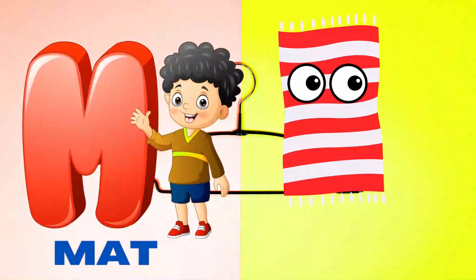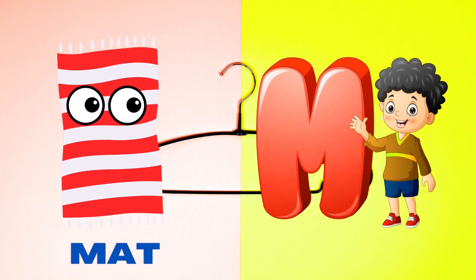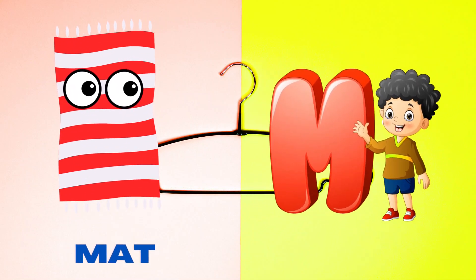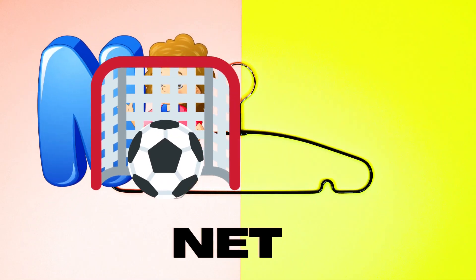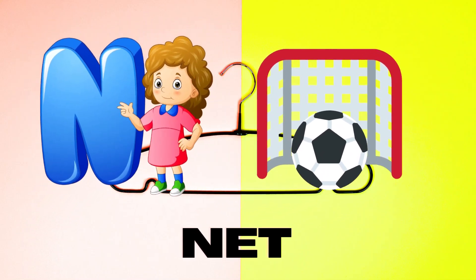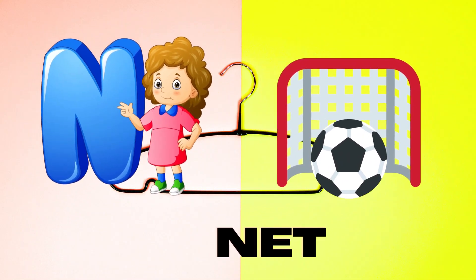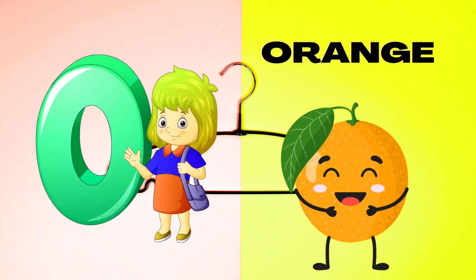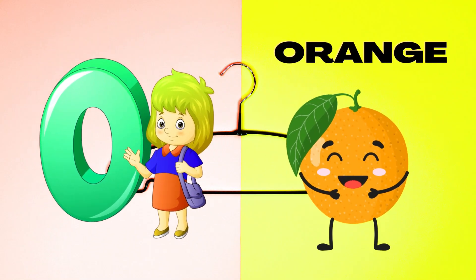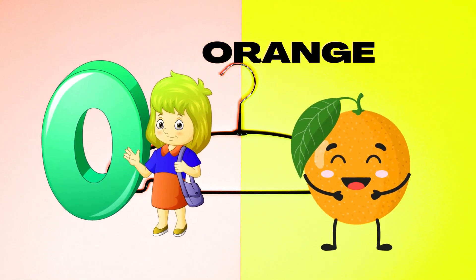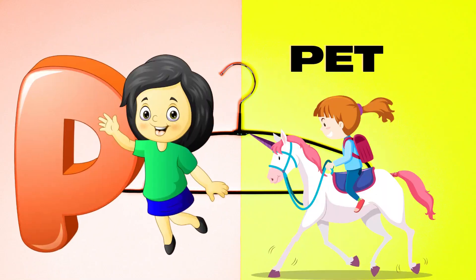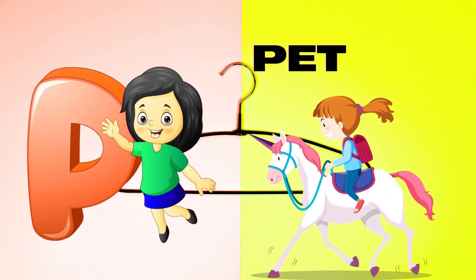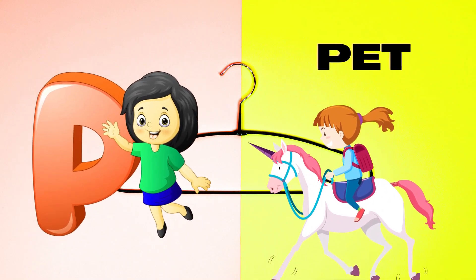M is for Mat, M-M-Mat. N is for Net, N-N-Net. O is for Orange, O-O-Orange. P is for Pet, P-P-Pet.